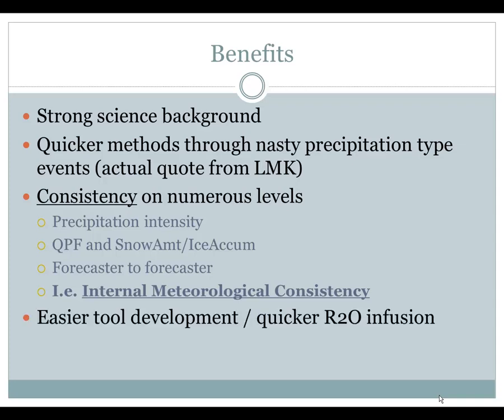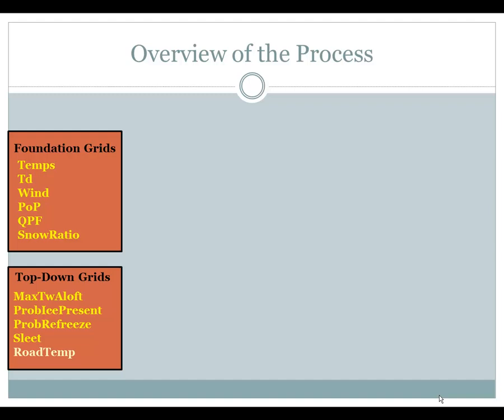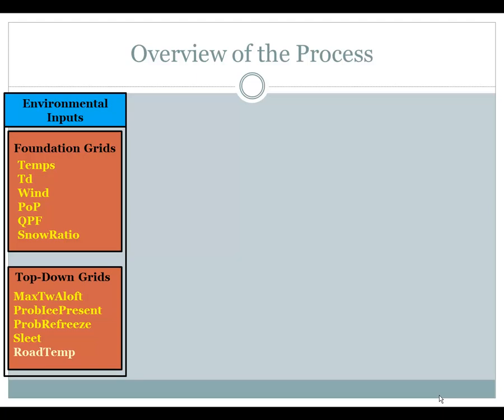It also provides easier tool development and quicker research-to-operations infusion, thanks to the scalar grids. Here's a quick overview of the process. The first part is something most of us already do — we'll call these the foundation grids: temperatures, dew points, winds, POP, QPF, and snow ratio. The next group might be new to you — these are the top-down grids. You may or may not have to edit these depending on the weather situation; if you get into sleet, freezing rain, and rain situations, these will become more useful. We're going to consider these two groups — foundation and top-down — as environmental inputs. This is really where you're spending your time, especially in the foundation grids.